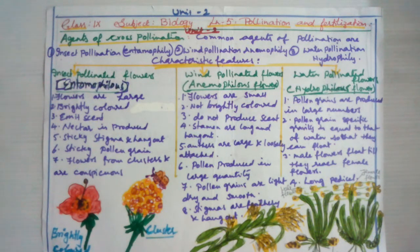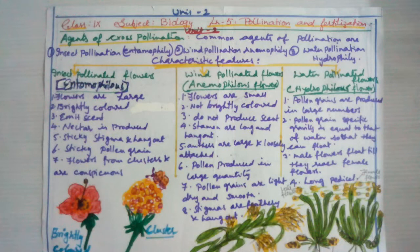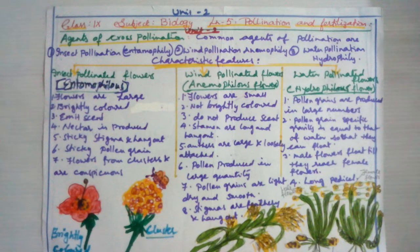Insect-pollinated flowers produce nectar, which is food for the insects. The pollen grains are sticky or spiny so they can be easily carried by insects — the moment an insect sits on the flower, the sticky pollen grains attach to it. The stigma is also sticky and does not generally hang out from the flower; it stays in place and attracts pollen grains when insects visit.